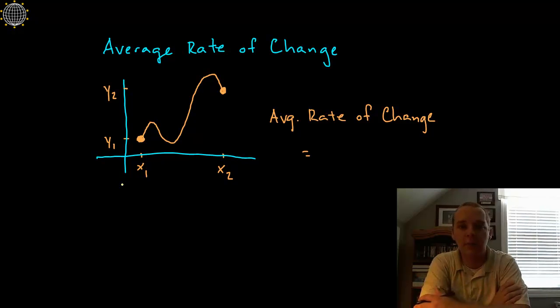Let's begin with average rate of change. Let's say you've got a function like this that goes from one point to another. This could be production level, velocity, distance traveled, it could be anything, temperature of the day, whatever.